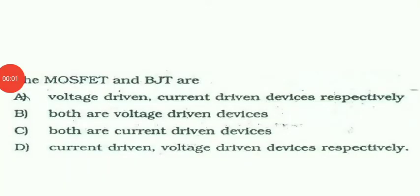Next question is: the MOSFET and BJT are voltage driven, current driven device respectively; both are voltage driven; both are current driven; current driven and voltage driven. We know that MOSFET is a voltage driven and BJT is a current driven, so the option is option A.